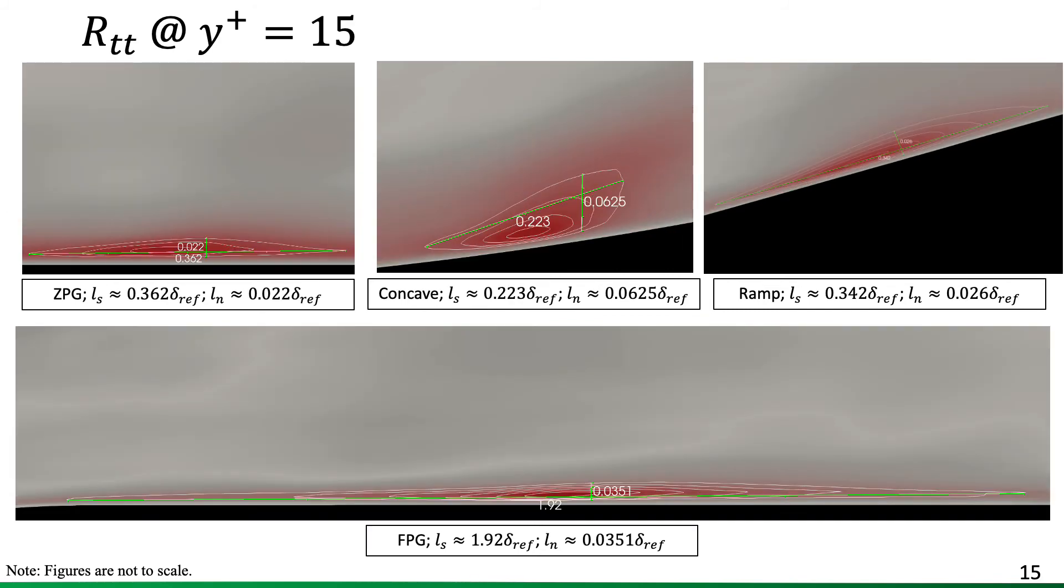Now moving to the thermal two-point correlations, the behavior is analogous to what was seen in the buffer region for the velocity, which we could probably argue for in particular in the incoming CPG and in the ramp region for a sustainment of the Reynolds analogy based on the information gathered from the two-point correlations. And we also see these structures, again, thickening and contracting in the concave portion. And again, the dramatic elongation and dilation in the FPG region.